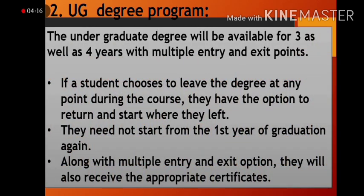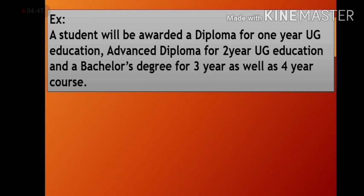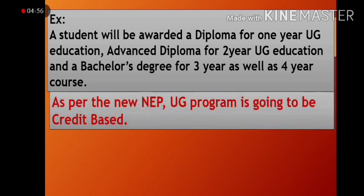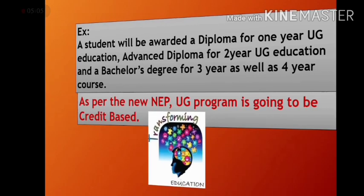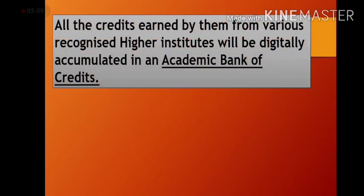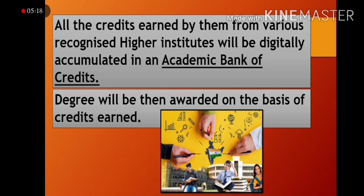There is a change in the undergraduate degree program. The undergraduate degree will be available for three as well as four years, with multiple entry and exit points. If a student chooses to leave the degree at any point, they have the option to return and start where they left off without restarting from the first year. They will receive appropriate certificates — a diploma for one year, an advanced diploma for two years, and a bachelor's degree for three or four years. The undergraduate program will be credit-based, and all credits earned from recognized higher institutes will be digitally accumulated in an Academic Bank of Credits, with the degree awarded based on credits earned.